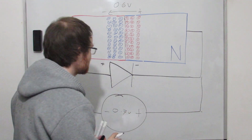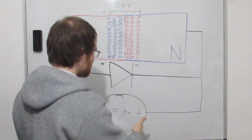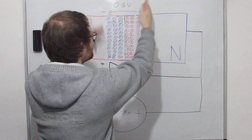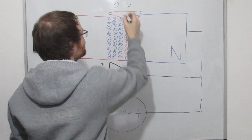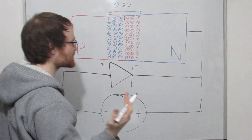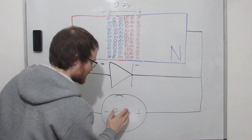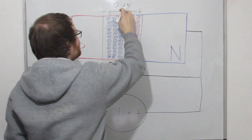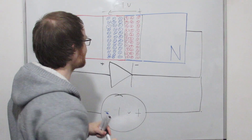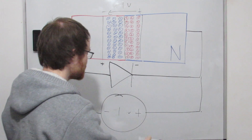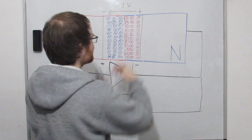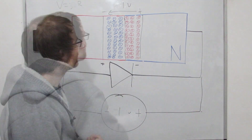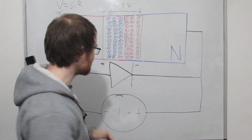If we say we apply 0.7 volts, almost instantly we supply charge carriers, most of them recombine, and the depletion layer just grows to match. Current flow stops again. If we increase it further to a volt, same thing happens — we're just widening this depletion layer. The wider it is, the harder it is for any charge carriers to get across, and that's the essential blocking function of the diode.